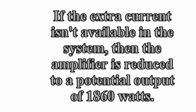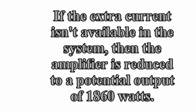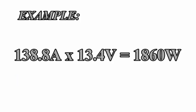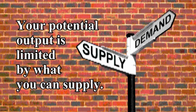Now, if the extra current isn't available in the system, then the amplifier is reduced to a potential output of 1860 watts. We figure this by 138.8 amps times 13.4 volts equals 1860. This should help you see the importance of voltage in your system. As voltage drops, so does efficiency in the amplifier, which creates heat and heat leads to damaged components. An amplifier may not reach the manufacturer's rated potential if your electrical system does not meet the demand and requirements of the amplifier you have chosen.